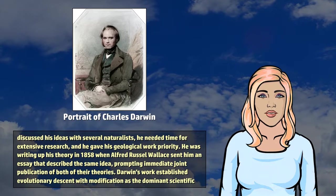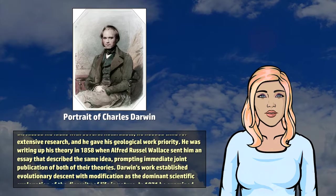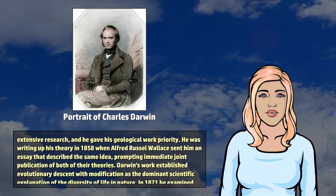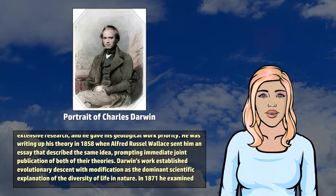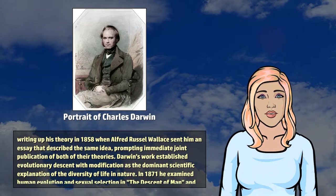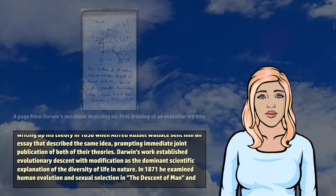He was writing up his theory in 1858 when Alfred Russell Wallace sent him an essay that described the same idea, prompting immediate joint publication of both of their theories.